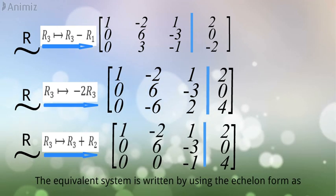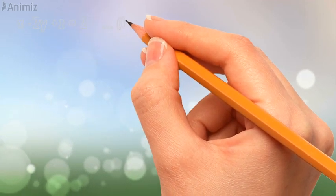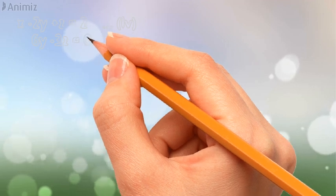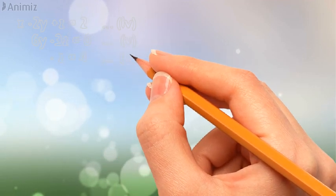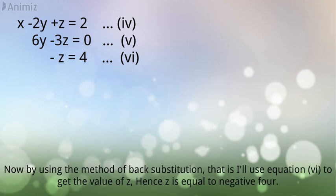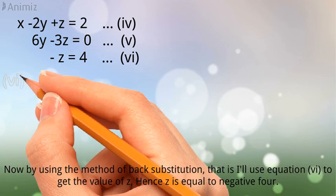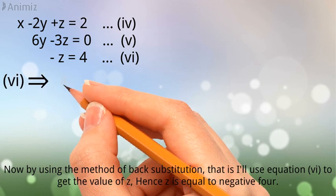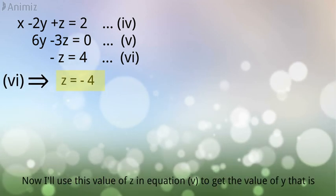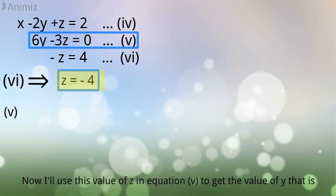The equivalent system is written by using the echelon form as x negative 2 times y plus z is equal to 2, 6 times y negative 3 times z is equal to 0, and negative times z is equal to 4. Now by using the method of back substitution, that is I'll use equation 6 to get the value of z. Hence, z is equal to negative 4. Now I'll use this value of z in equation 5 to get the value of y.